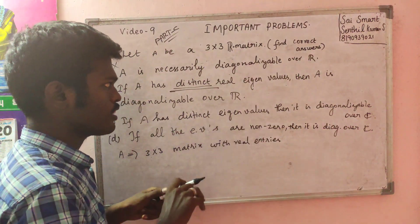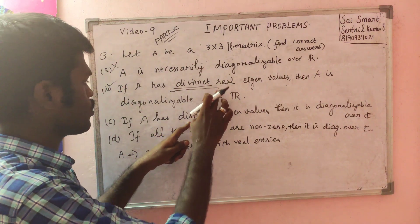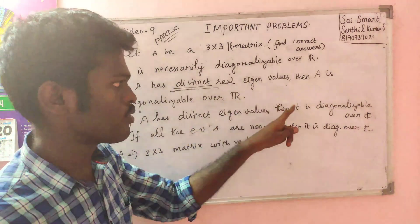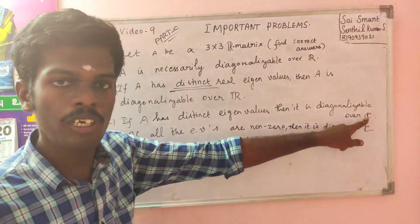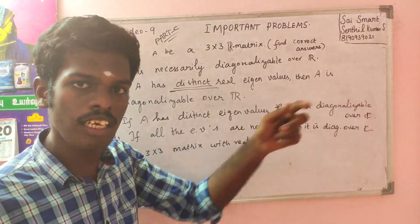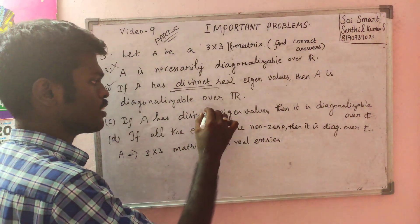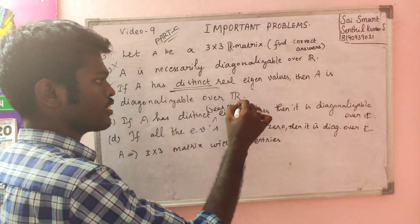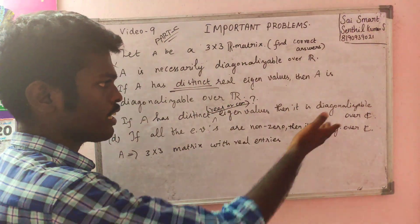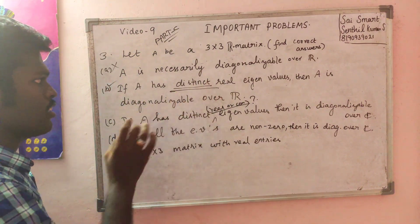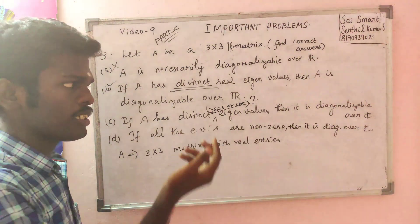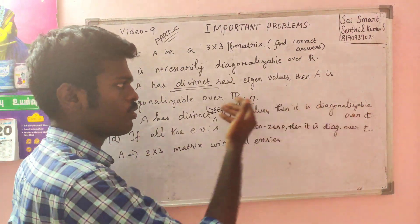Between option B and option C there is a difference in whether we work over ℝ or ℂ. If we have complex entries then it is diagonal over ℂ. Complex entries are included. If we can add a complex entry then it is diagonalizable. Distinct real eigenvalues implies diagonalizable over ℂ as well. So overall the distinct eigenvalues condition makes it diagonalizable over ℂ.